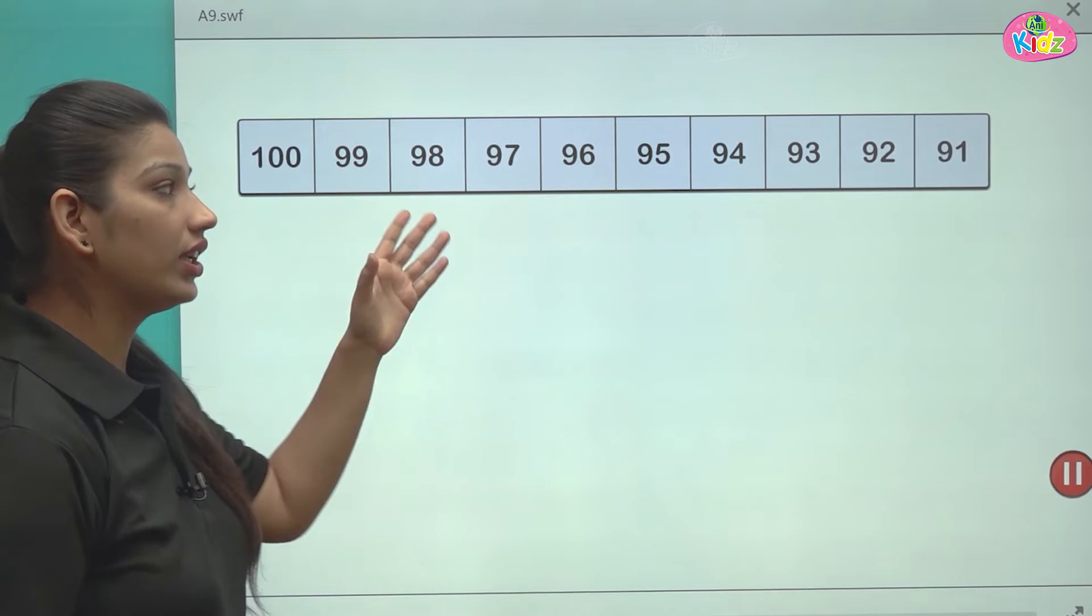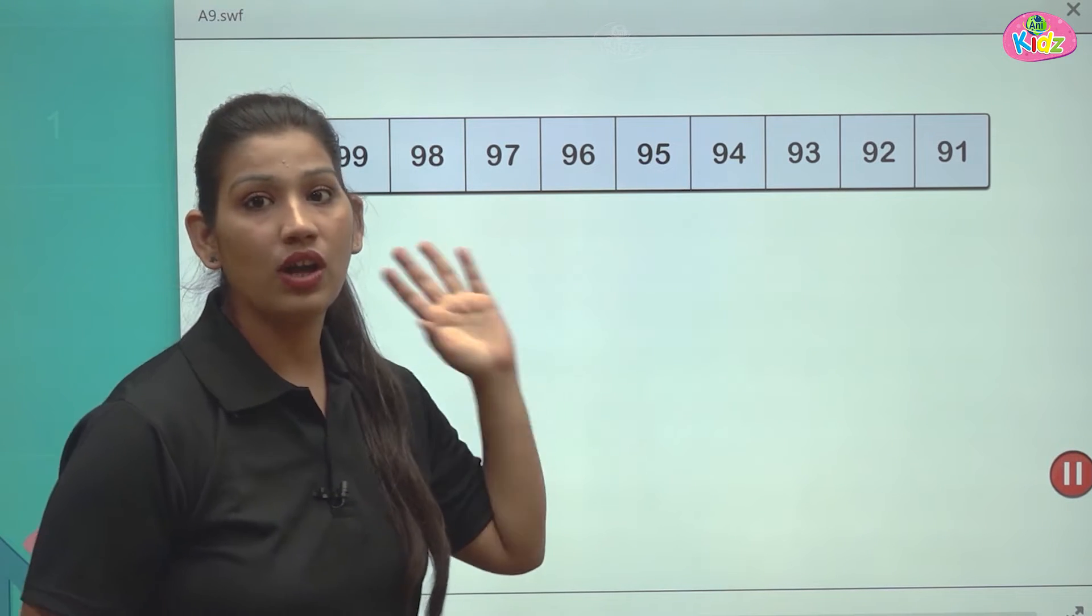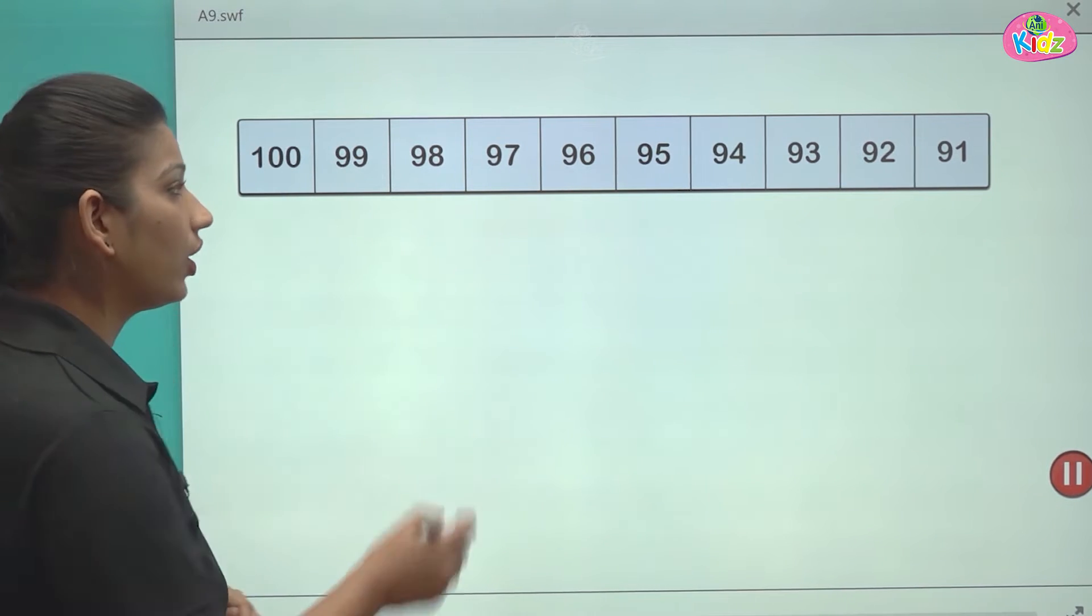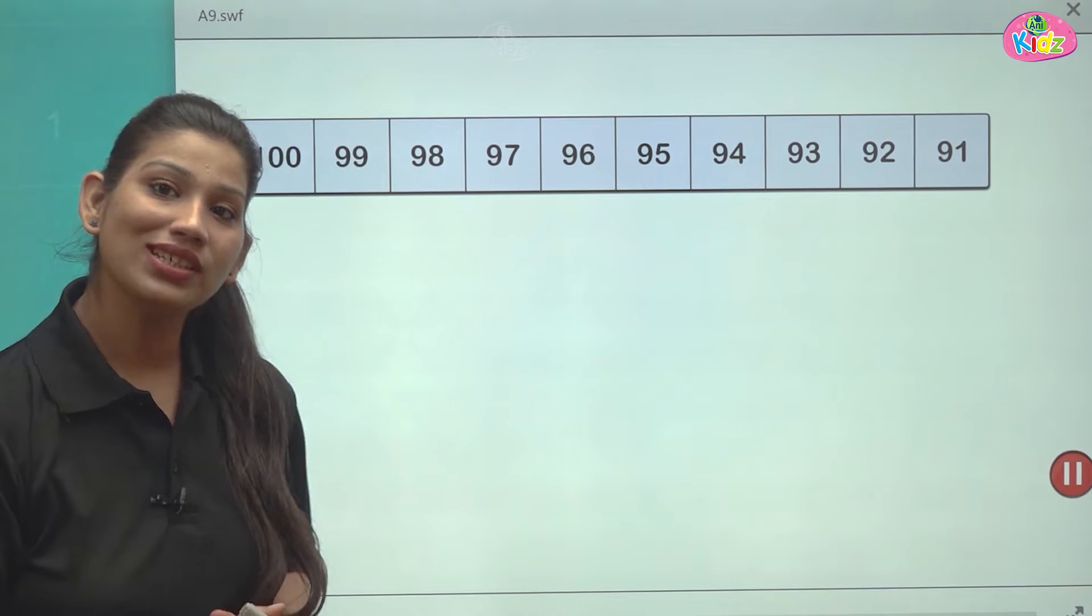We are going in backward direction. 100 is the biggest number. 91 is the smallest of them. So we are going in the backwards direction called as backward counting.